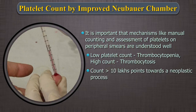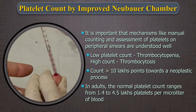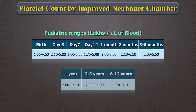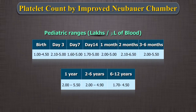A count greater than 10 lakhs points towards a neoplastic process in most cases. In adults, the normal platelet count ranges from 1.4 to 4.5 lakhs platelets per microlitre of blood. Pediatric ranges are different as shown in the table. A platelet count of 1.4 lakhs which is normal for adults is low for children except in neonates. This should be kept in mind while reporting platelets in children.